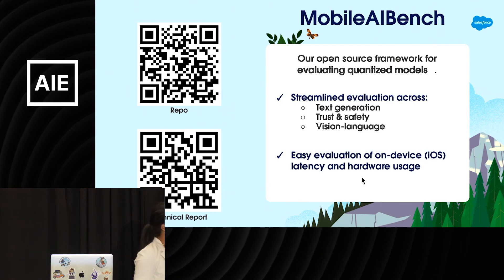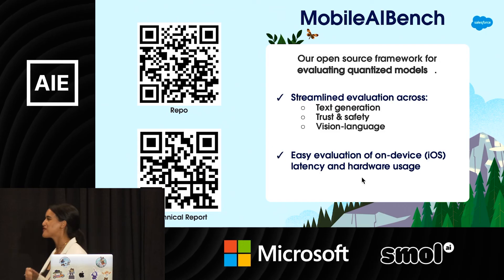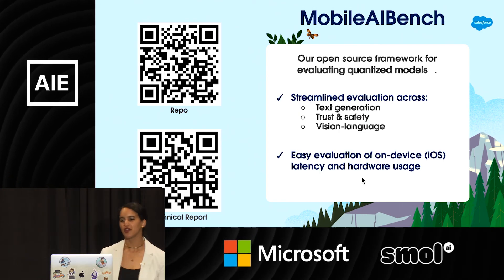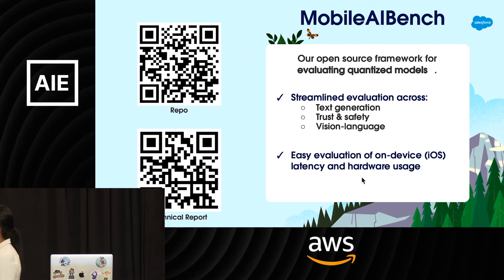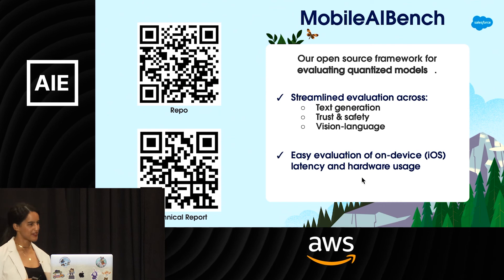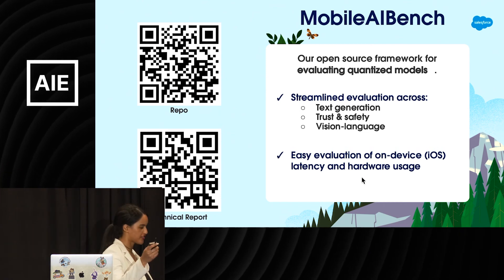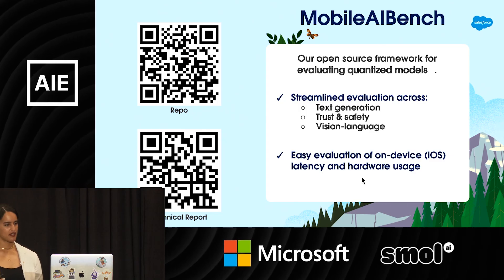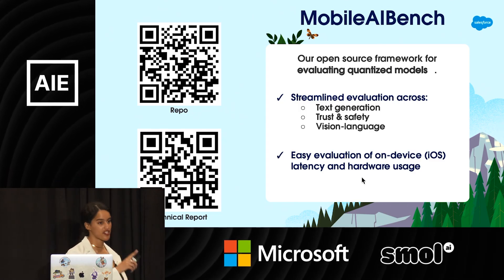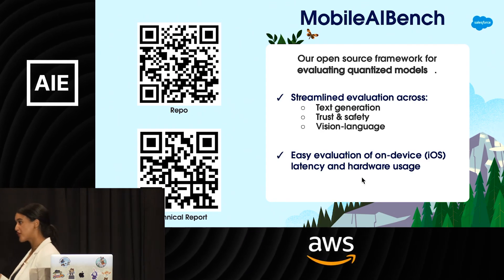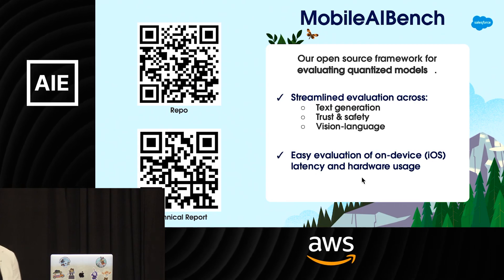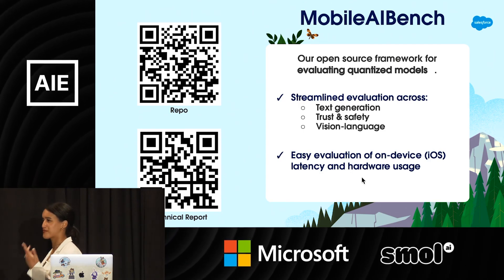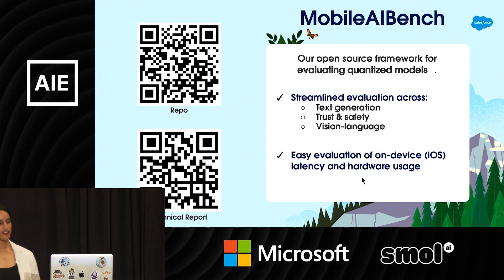As mentioned with quantization, it is still important to evaluate your quantized model before you deploy it. I want to introduce one of the open source repos my team just released — called Mobile AI Bench. It's an open source framework for evaluating your quantized models. It will give you rigor before you actually deploy: streamlining evaluation across text tasks, trust and safety — which is really important to make sure doesn't degrade with quantization — and vision-language tasks. If you're interested in deploying quantized models to device, we even have an iOS app that measures latency of the quantized model, hardware usage, and even battery drainage.